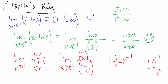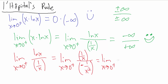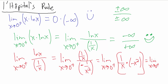Now let's simplify. We have the limit as x goes to 0 from the positive side of (1 over x) divided by (negative 1 over x squared). Dividing by negative 1 over x squared is like multiplying by negative x squared, so one x in the denominator cancels with one x from x squared. What we're left with is simply negative x. So the limit as x goes to 0 from the positive side of negative x is negative zero, which is just zero.